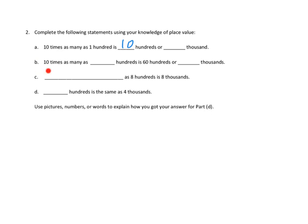So here's A, B is a little bit trickier. 10 times as many as blank hundreds is 60 hundreds or blank number of thousands. Interesting. 10 times as many as how many hundreds would give us 60 hundreds? I'm going to leave that one for you.